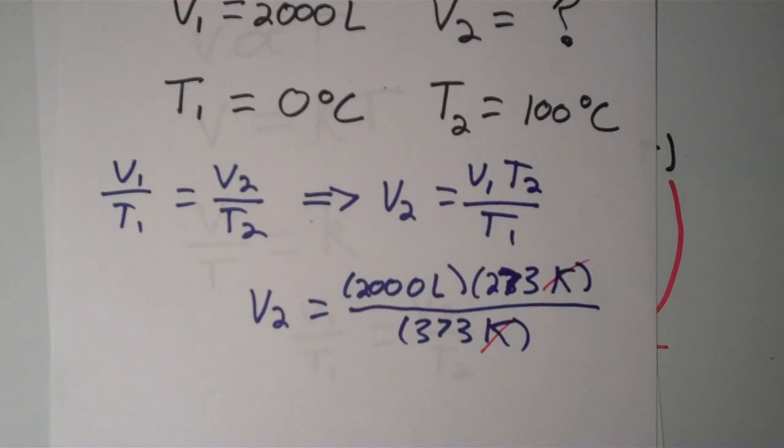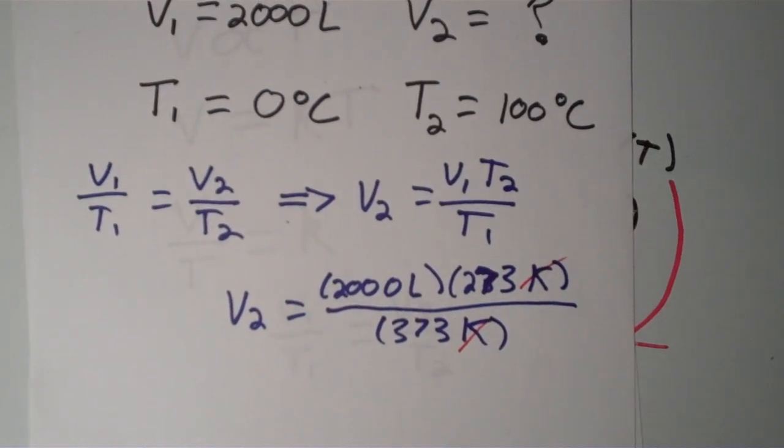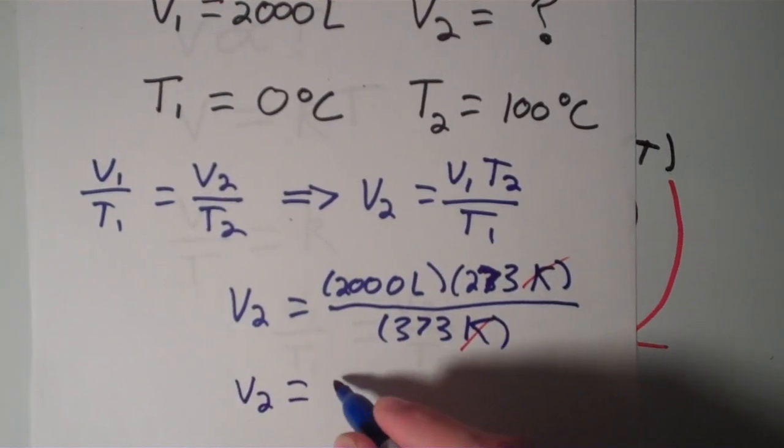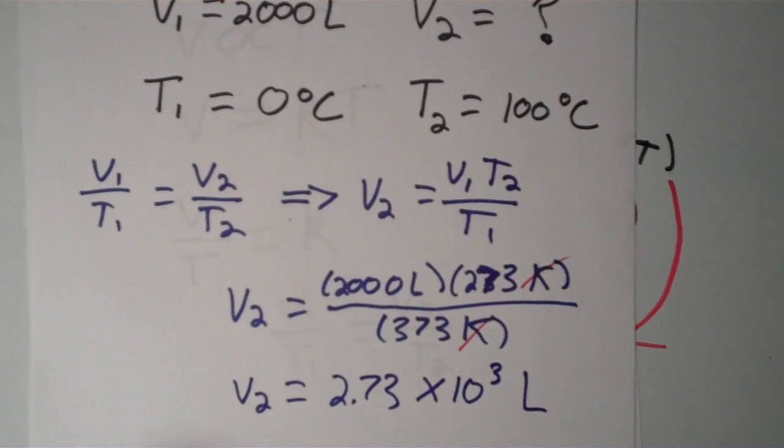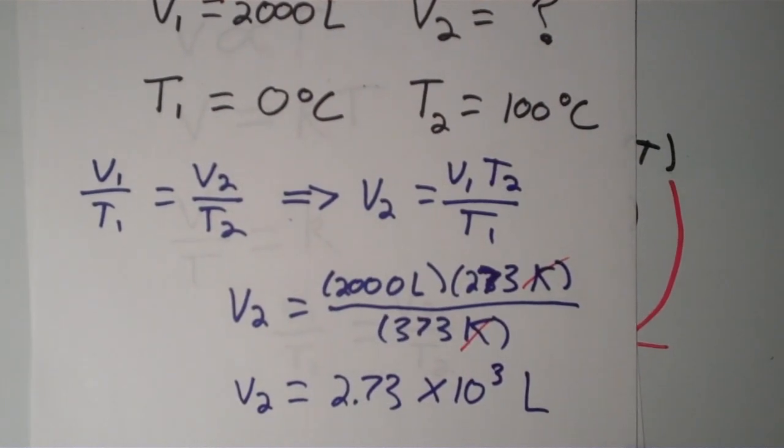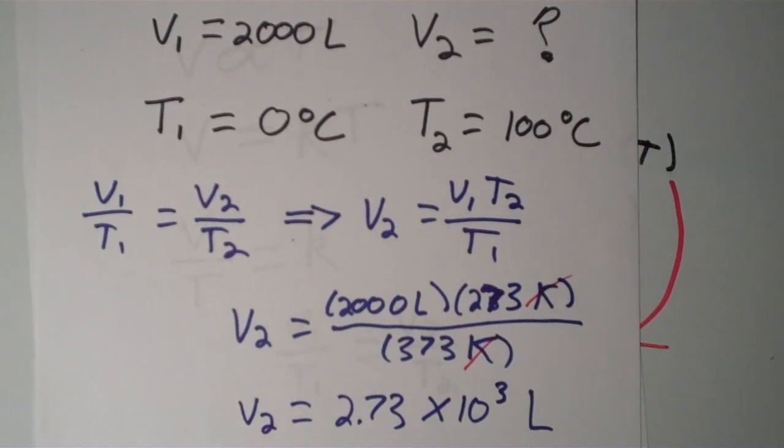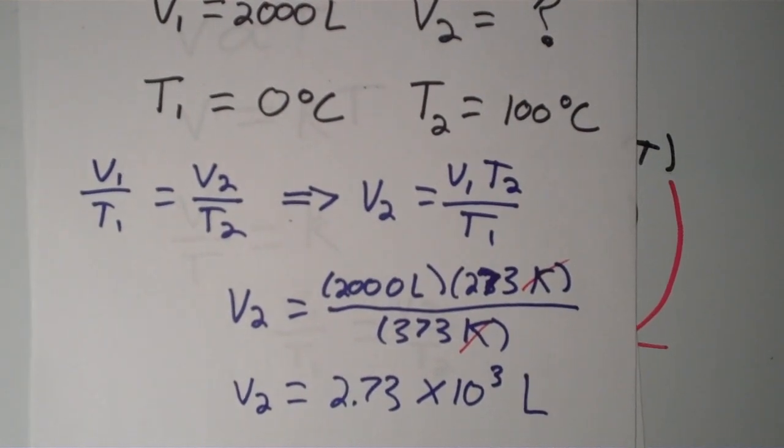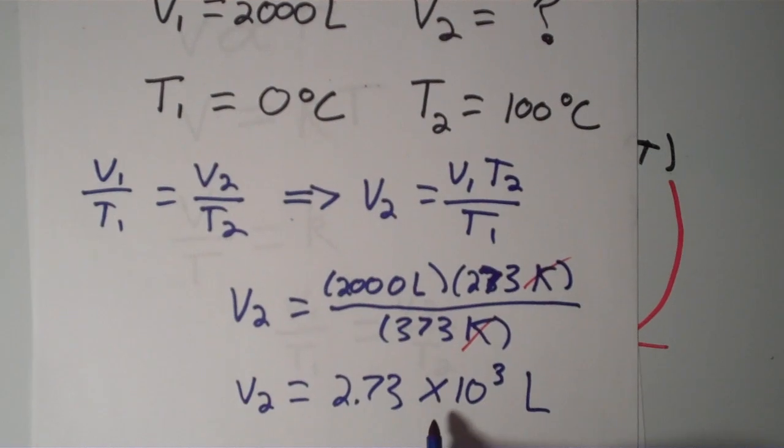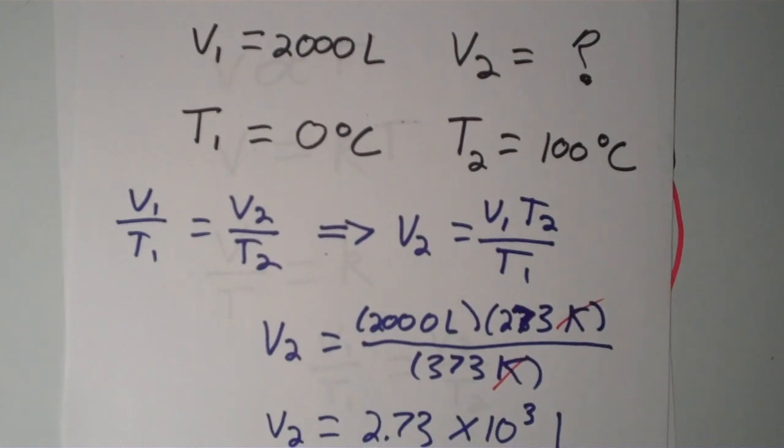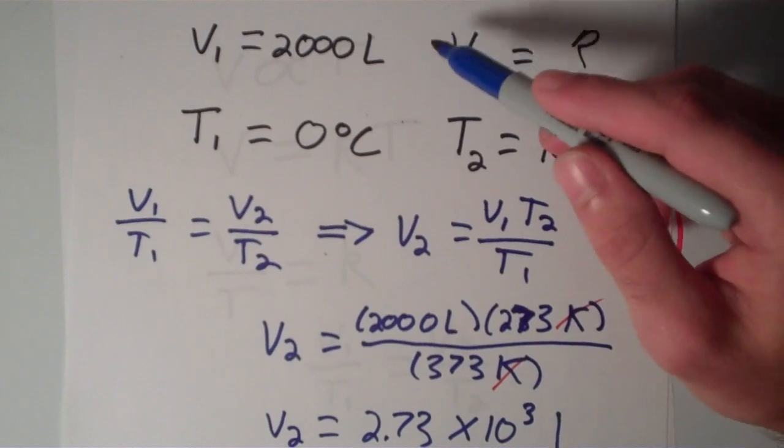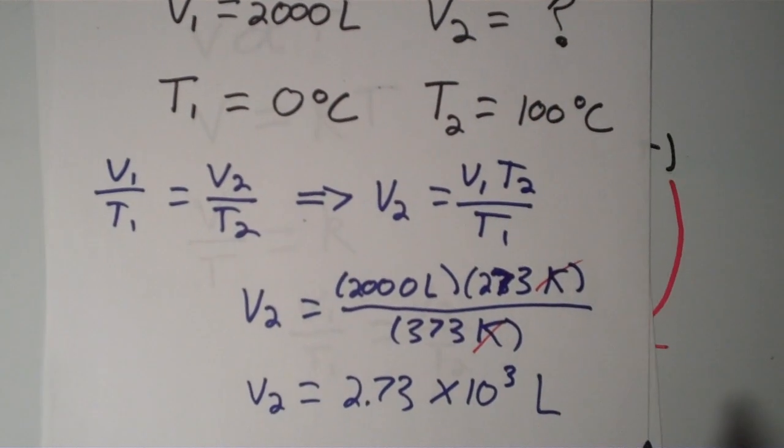And the new volume, the new volume is V2 is equal to 2.73 times 10 to the third liters. So about 2,700 liters. So that means that the volume of the gas increased by about 700 liters, which makes sense. This is one of those kinds of problems that you can intuitively check. If my V2 is not greater than V1, at least by a little bit, then I know I messed up because, like I said, of Charles's law, they're directly proportional. An increase in temperature should always lead to an increase in volume. So there you go. There is Charles's law.